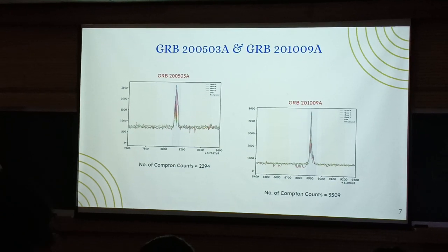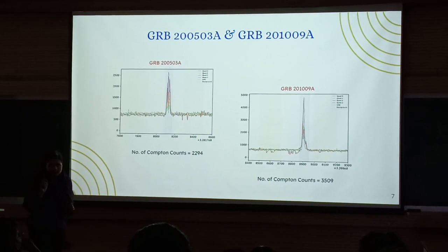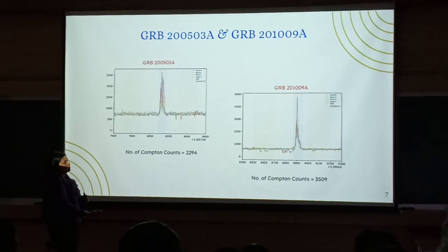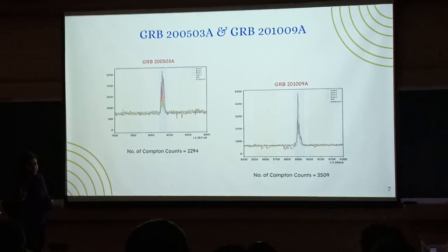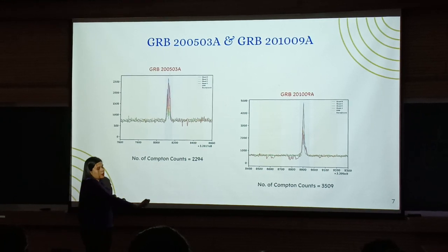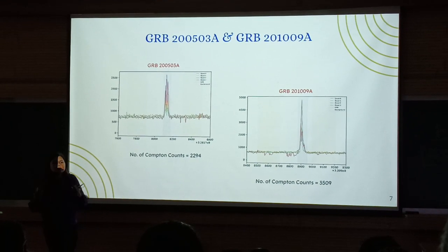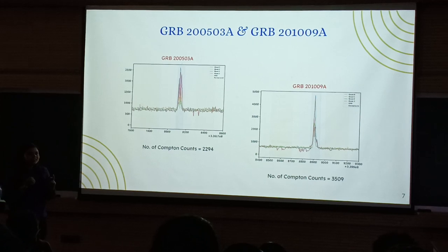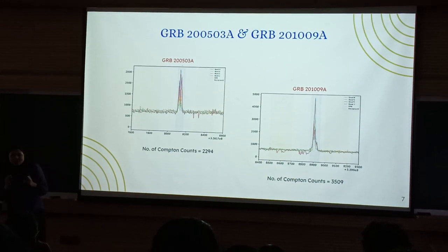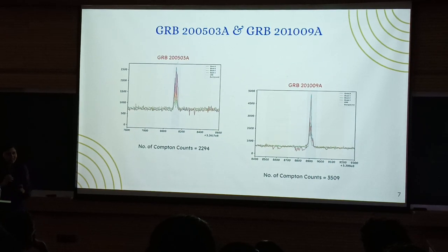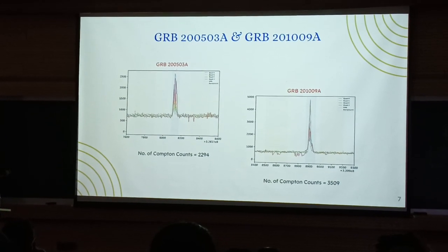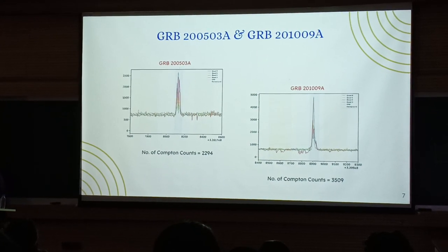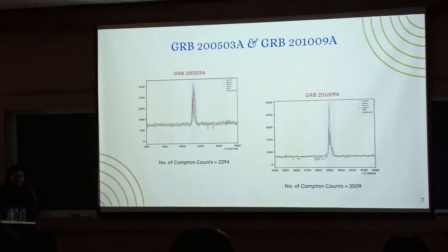There were two very bright GRBs we were interested in: GRB 200503A and GRB 201009A. These were interesting because they had a large number of Compton events associated with them, making them eligible for polarization study. But nature doesn't want to reveal its secrets easily — we didn't have localization information for these. Only AstroSat and Agile detected them, and both instruments lack spectroscopy and localization capability.